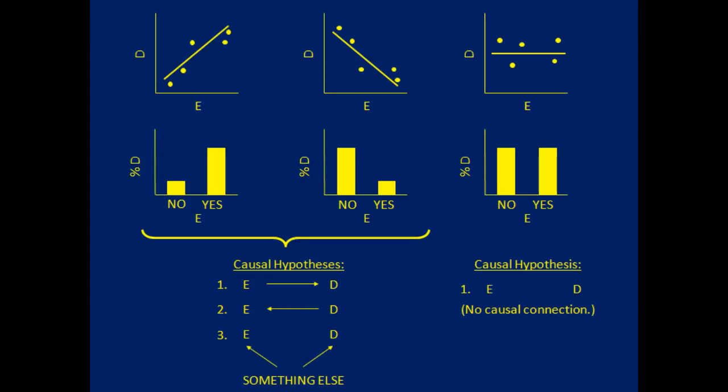Let's take a step back first. What we've seen so far is a representation of how the patterns we see in data are related to our causal hypotheses about reality. The top row here is our view when looking at a continuous outcome, and the bottom is our view when looking at a binary outcome.